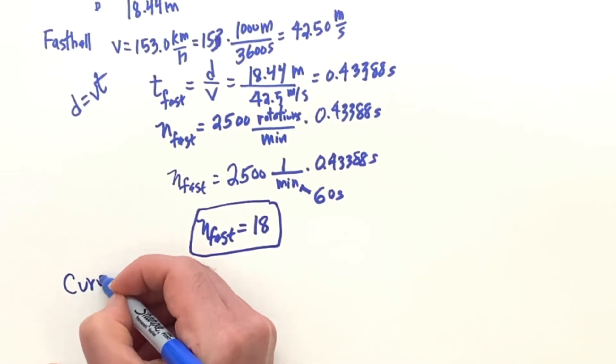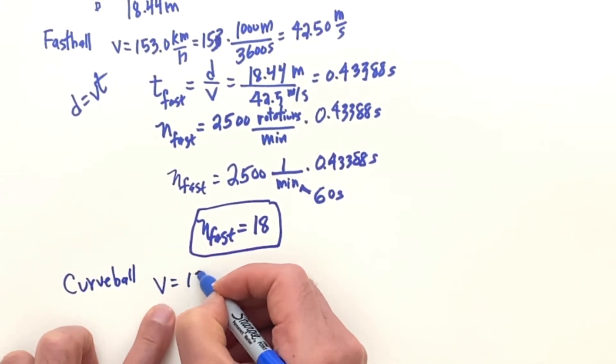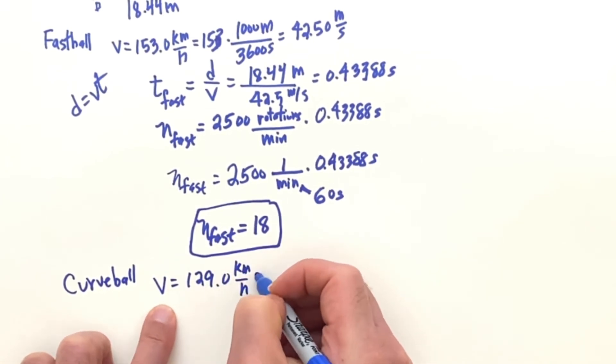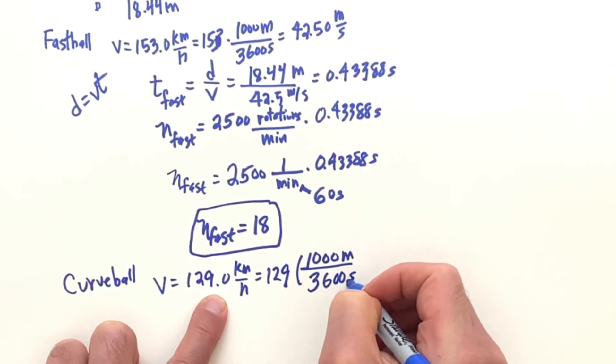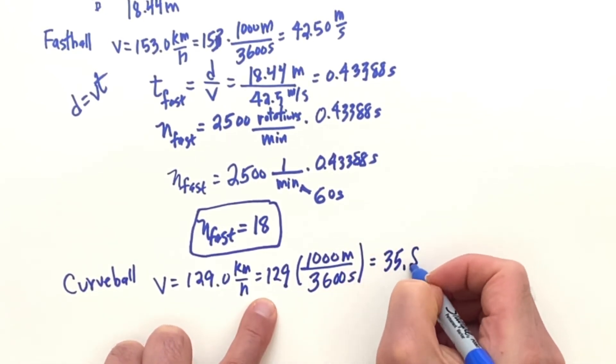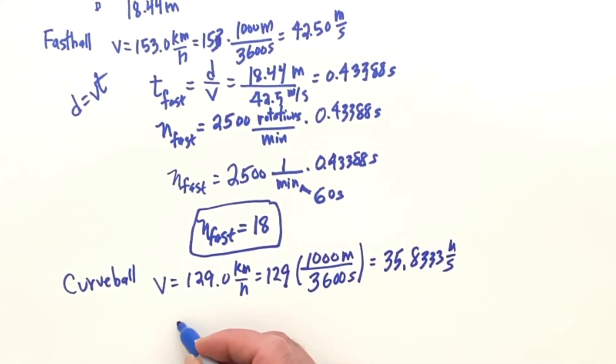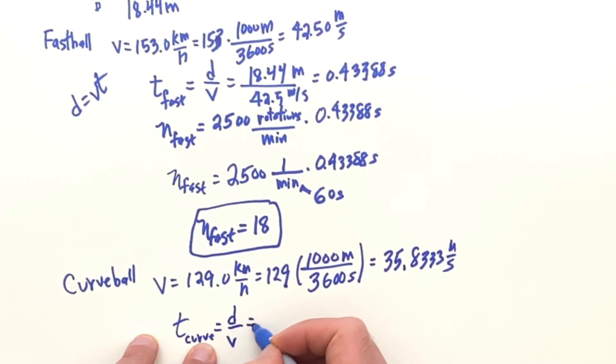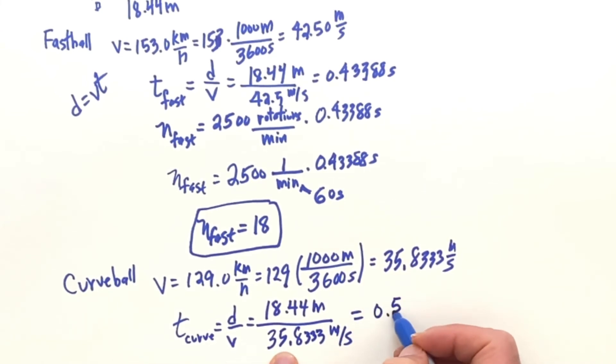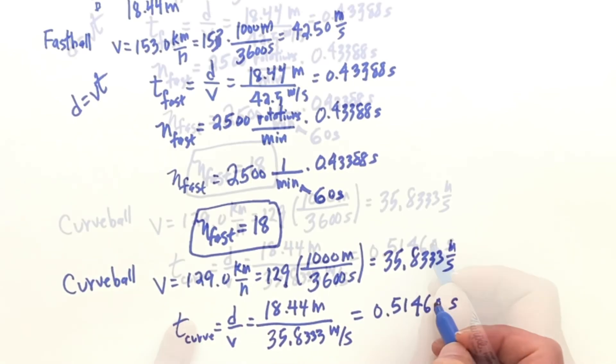Now for the curveball, the velocity is 129 kilometers per hour, so that's 129 times a thousand meters over 3600 seconds, and that is 35.8333 meters per second. And then the time for the curveball, using the D over V idea again, this is going to be 18.44 meters, the distance from the pitcher to the plate, divided by the 35.8333 meters per second. Meters cancel, seconds come upstairs, you get 0.51460 seconds.